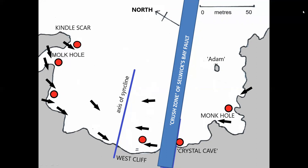The black arrows on the map indicate dip direction. We accessed the shore via the new steps, then worked our way past the steeply dipping beds at the old steps to Crystal Cave. Further south is Monk Hole, a cove, possibly a collapsed and subsequently enlarged blowhole site, in relatively undisturbed chalk beds.